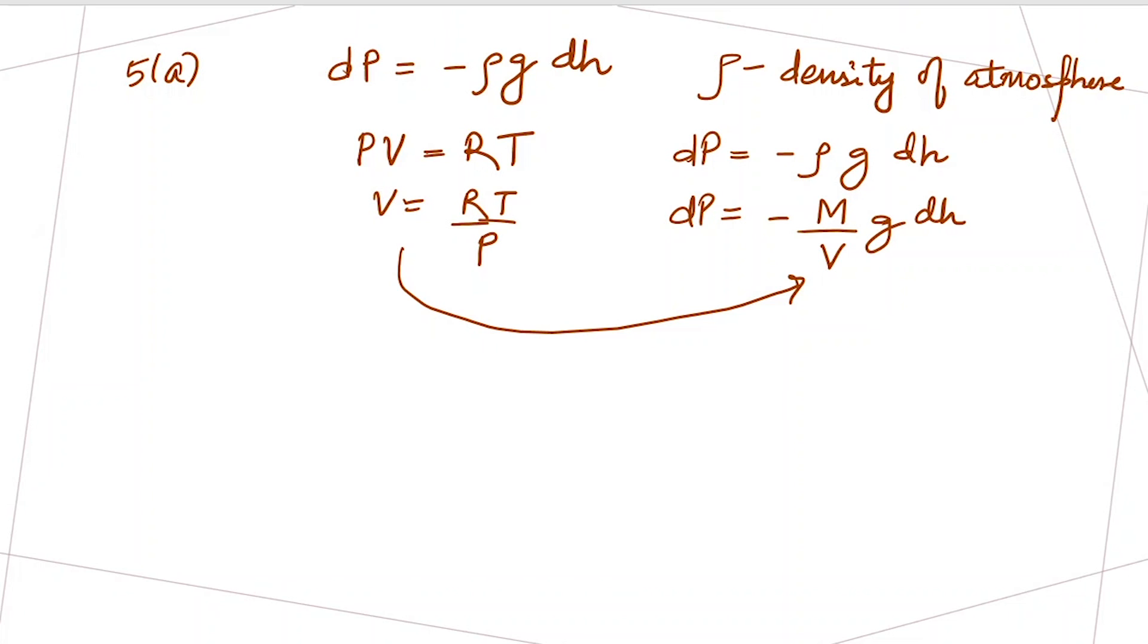The change in pressure is equal to minus mass, this is the molecular weight of nitrogen, times g over RT times p dh. Let's take this p here, and this is all constant: mg, R, and T dh.